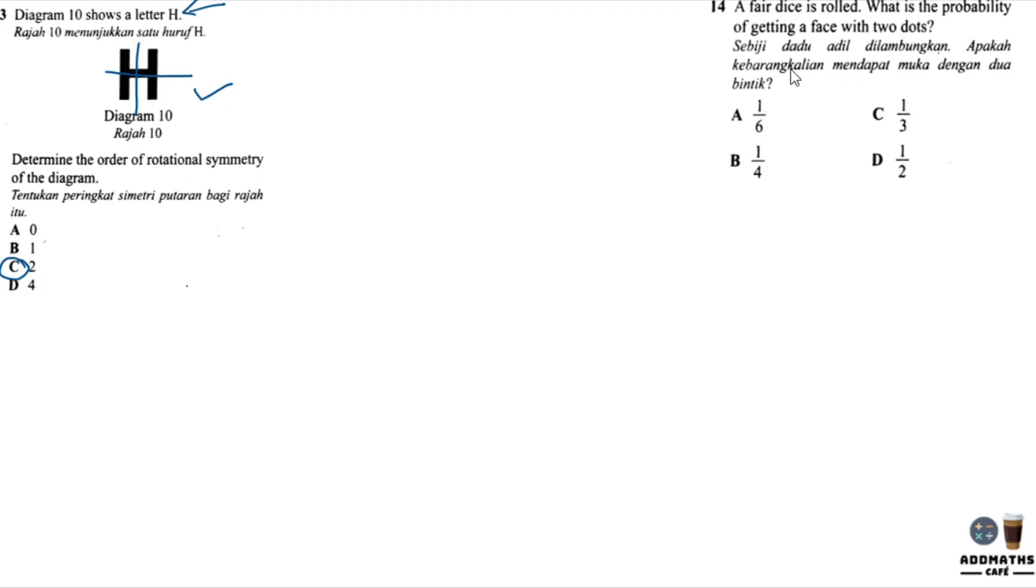For question 14, a fair dice is rolled. Dice has 6 faces. What is the probability of getting a face with 2 dots? 2 dots means 2. In a dice you can get 1, 2, 3, 4, 5, or 6. What is the probability of getting 2? The probability of getting 2 is number of getting 2 divided by number of samples.